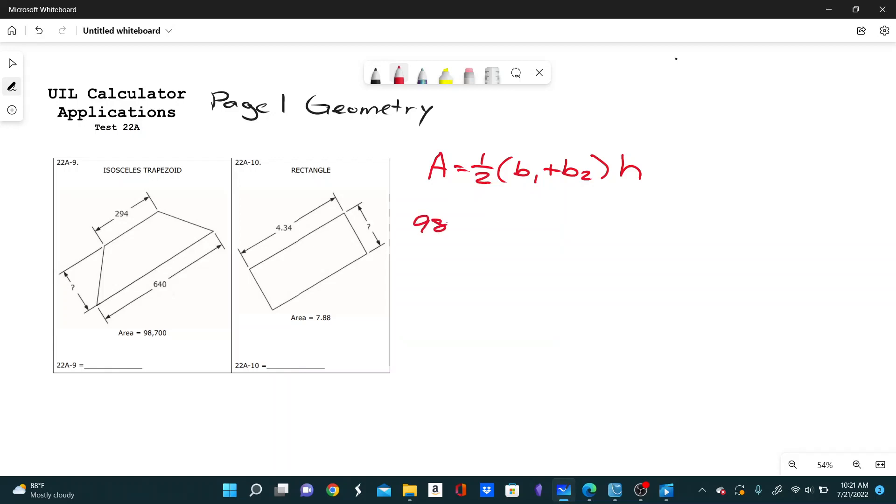So 98,700 equals one half times 294 plus 640 times h. So to solve for h, we just multiply both sides by 2, and then divide by the sum of the bases.